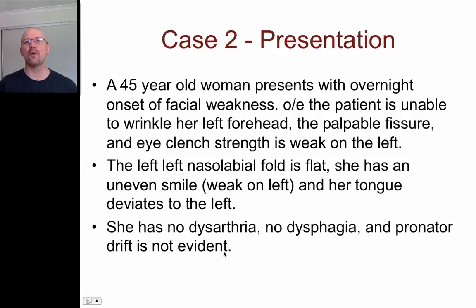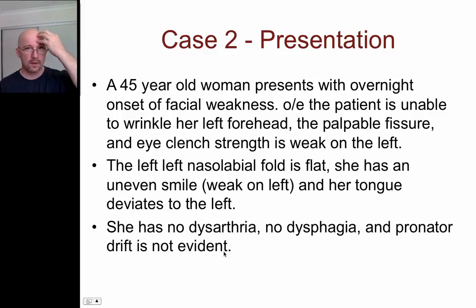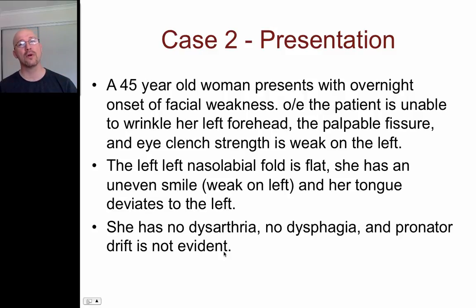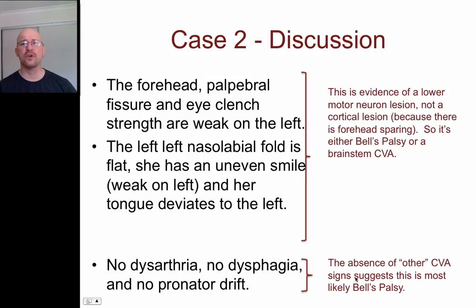Case two: a 45-year-old woman with overnight onset of facial weakness. On examination, she is unable to wrinkle her left forehead, and the palpable fissure and eye squeeze strength are weak on the left. There is a flat left nasolabial fold, tongue deviation to the left, and an unequal smile. But there is no dysarthria, no dysphagia, and no pronator drift — forehead and face but not the body, all on the same side, with a prolonged onset over hours. This is Bell's palsy: evidence of a lower motor neuron lesion but no cortical involvement and no somatic signs.